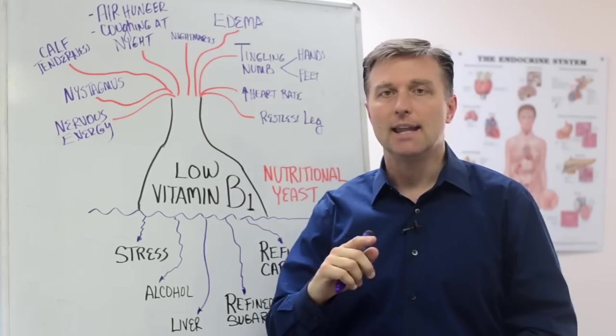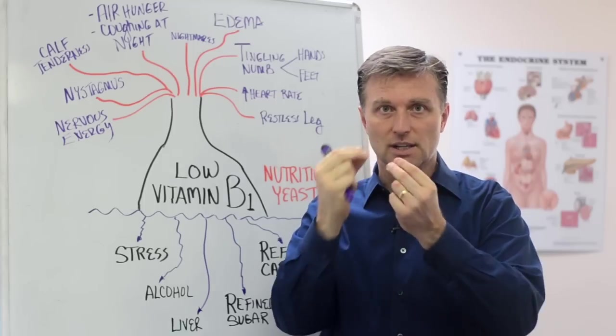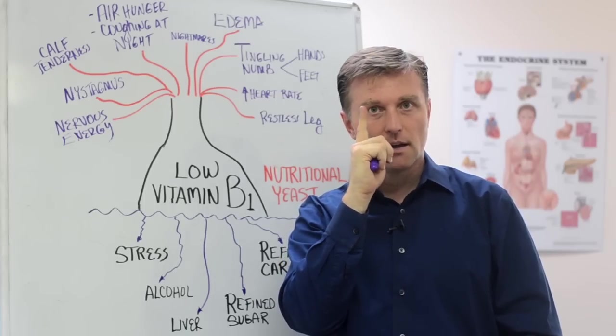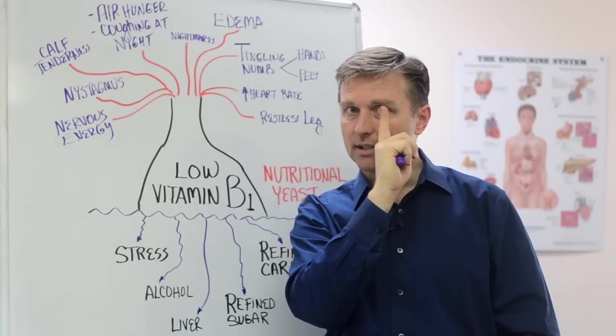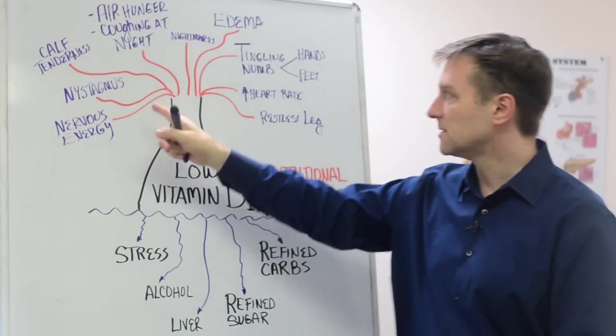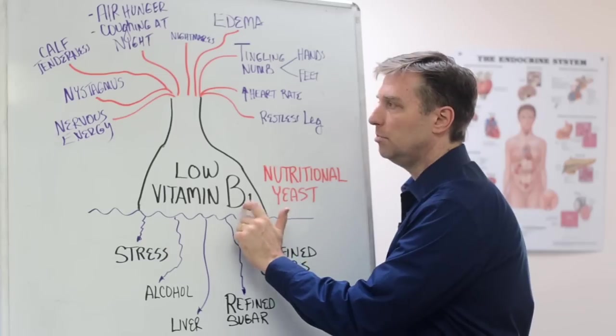And nystagmus is that that coordination isn't occurring. So you'll have this dancing eye. So you'll see the eye just dancing like that. That's nystagmus, but that's coming from a low B1.